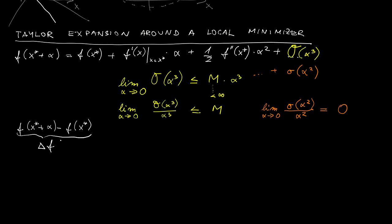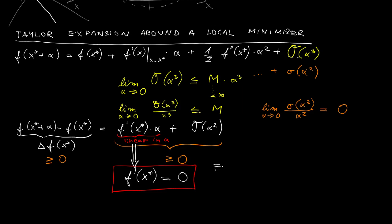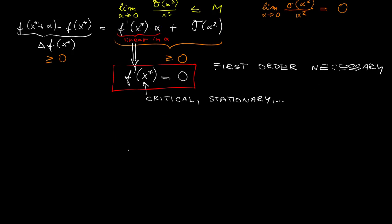Now, let's go back to Taylor. I will first move the value of the function of the minimizer to the left-hand side and define an increment. Then, what's left on the right-hand side is this, and I know that in the local minimum, I must have this term non-negative. Now, since the first of the two terms on the right-hand side is linear in alpha, I can see that the only way to guarantee that the function cannot go arbitrarily below 0 is that the derivative is equal to 0. Hence, we have the first order necessary condition of optimality. The point which satisfies this is called a critical point or sometimes stationary point.